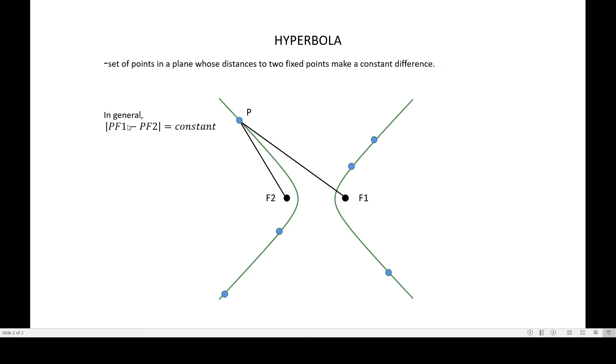In this expression, it tells you that the difference of the two distances is a constant. Now, for you to figure it out better, the constant will always be equivalent to 2a. Again, the difference of the distances to the fixed points is always 2a, that means it's fixed.